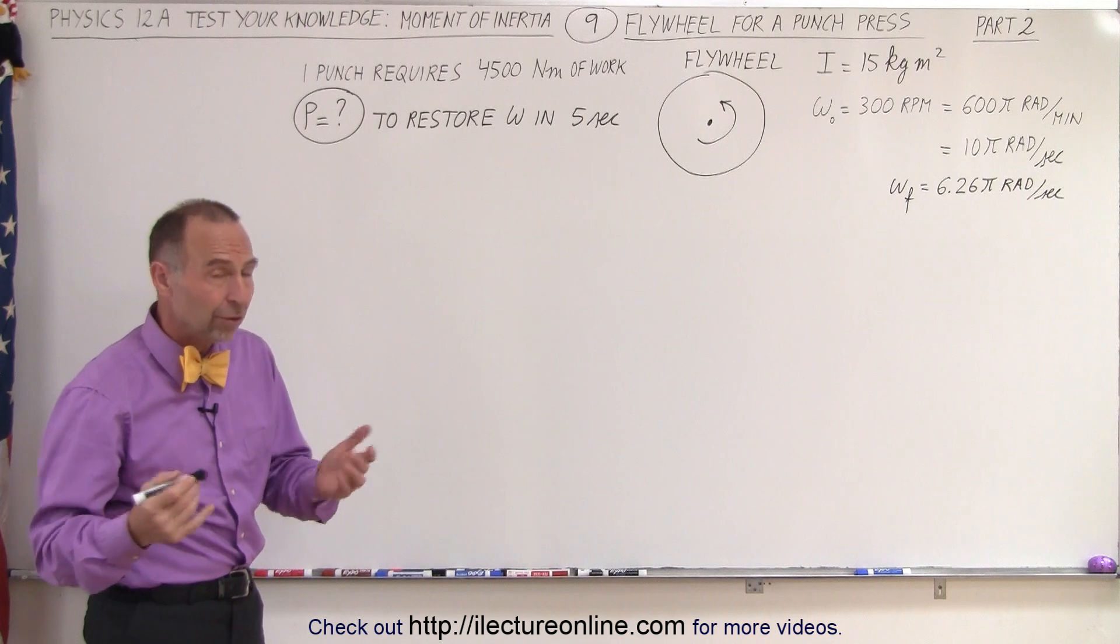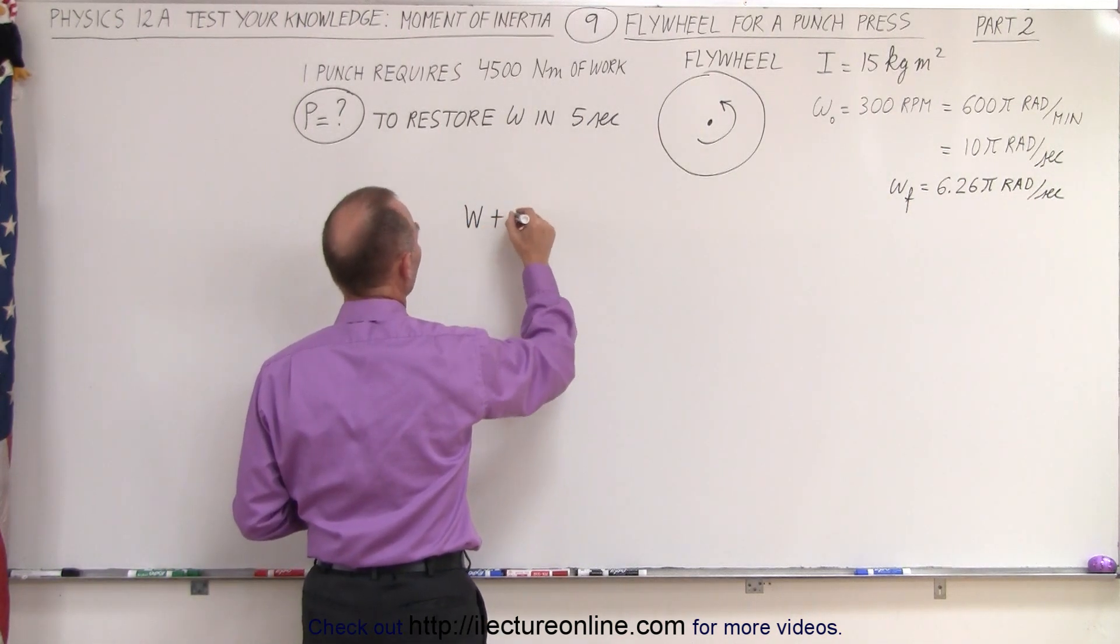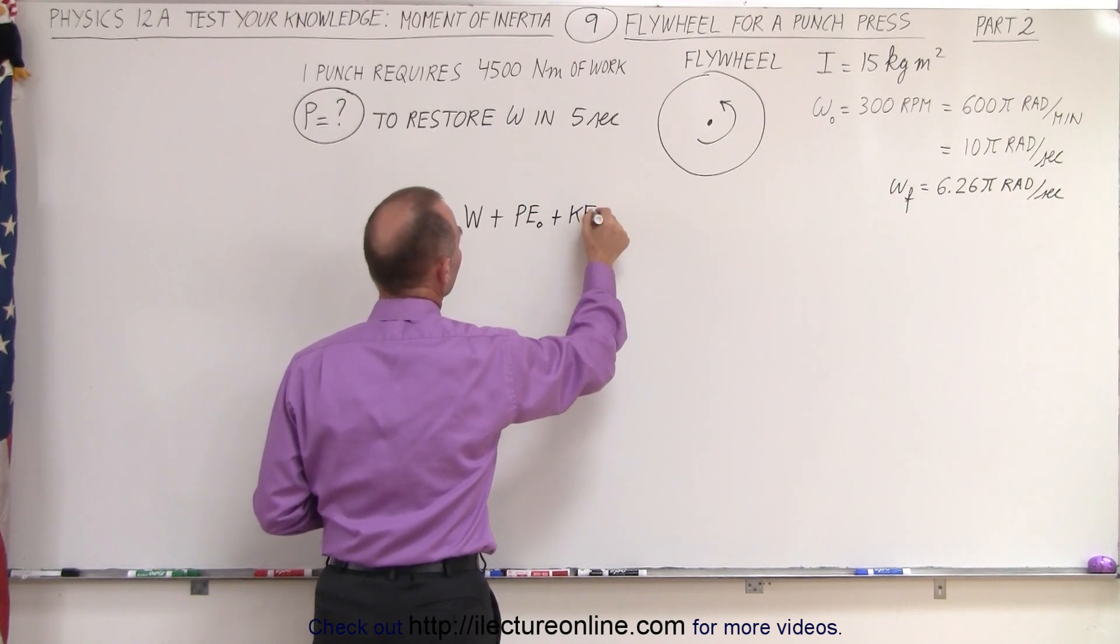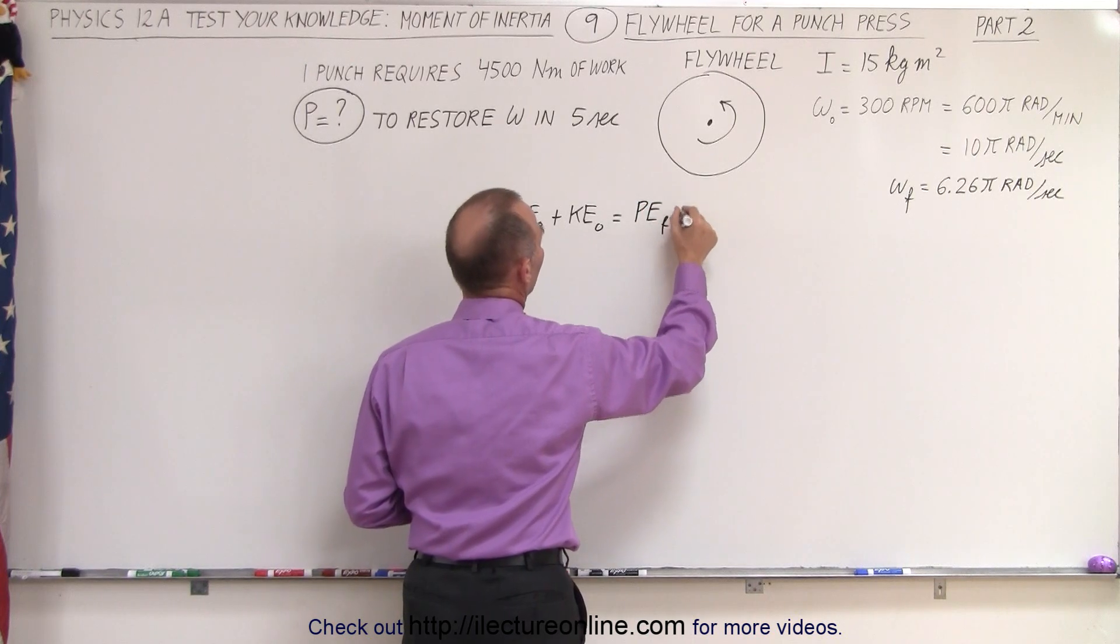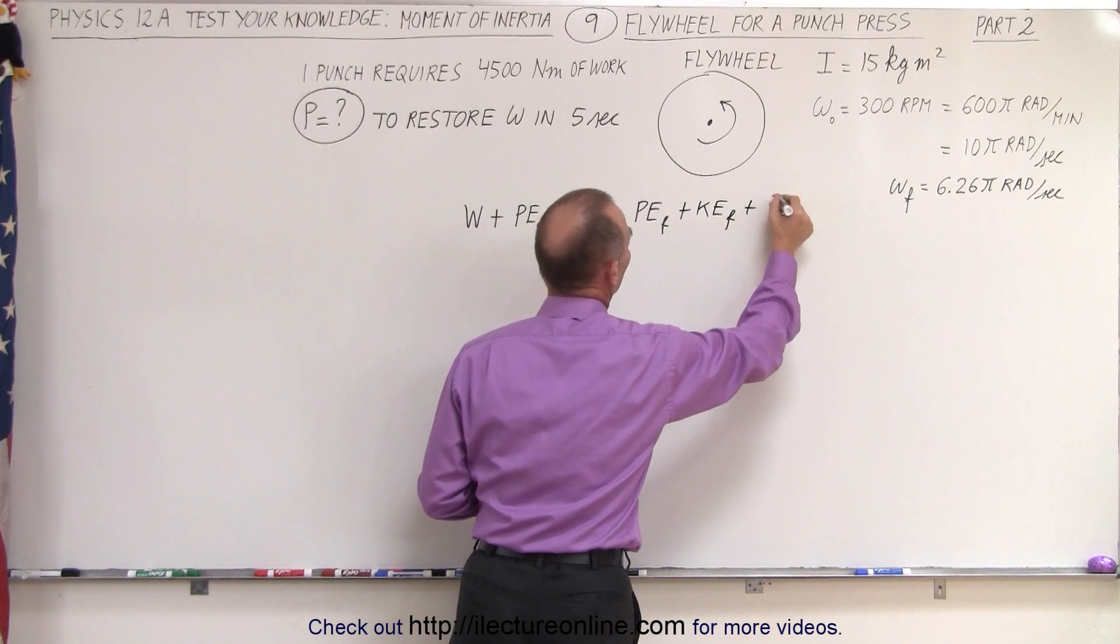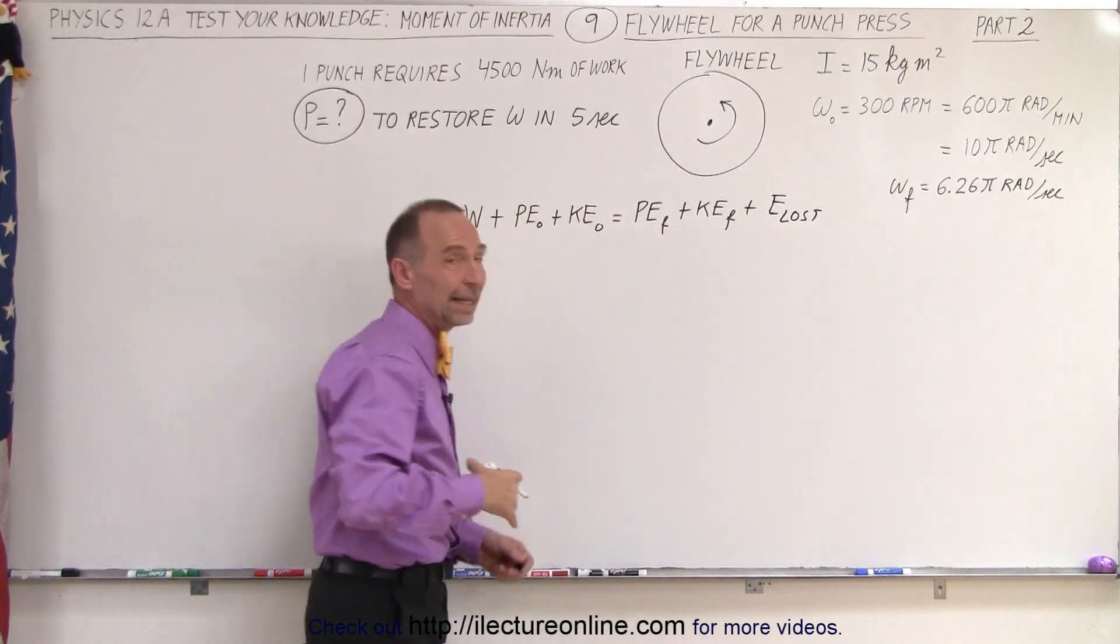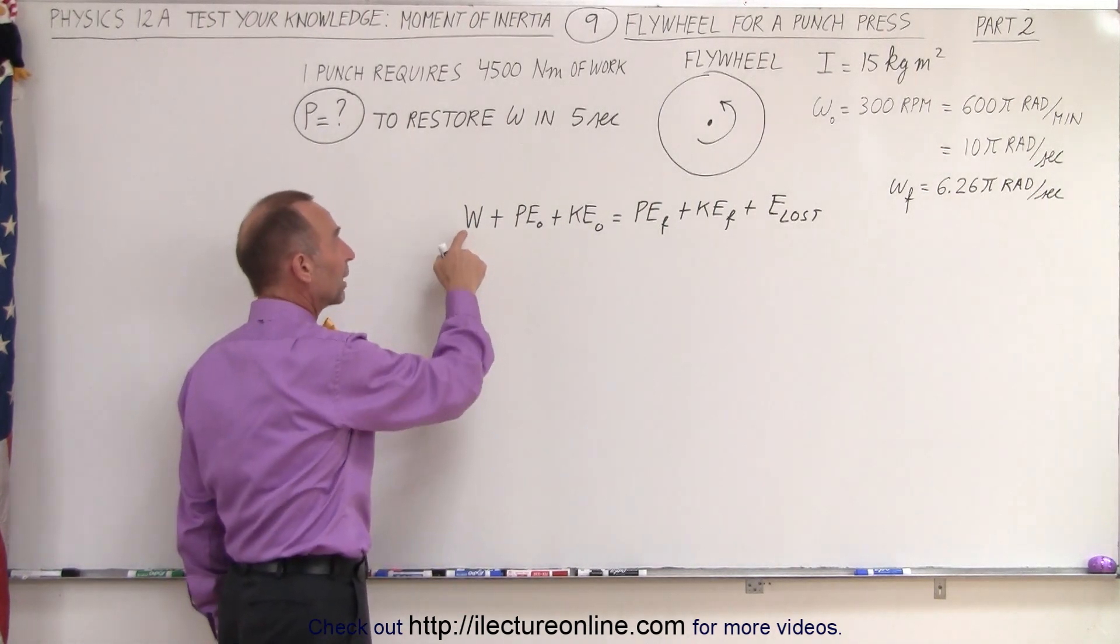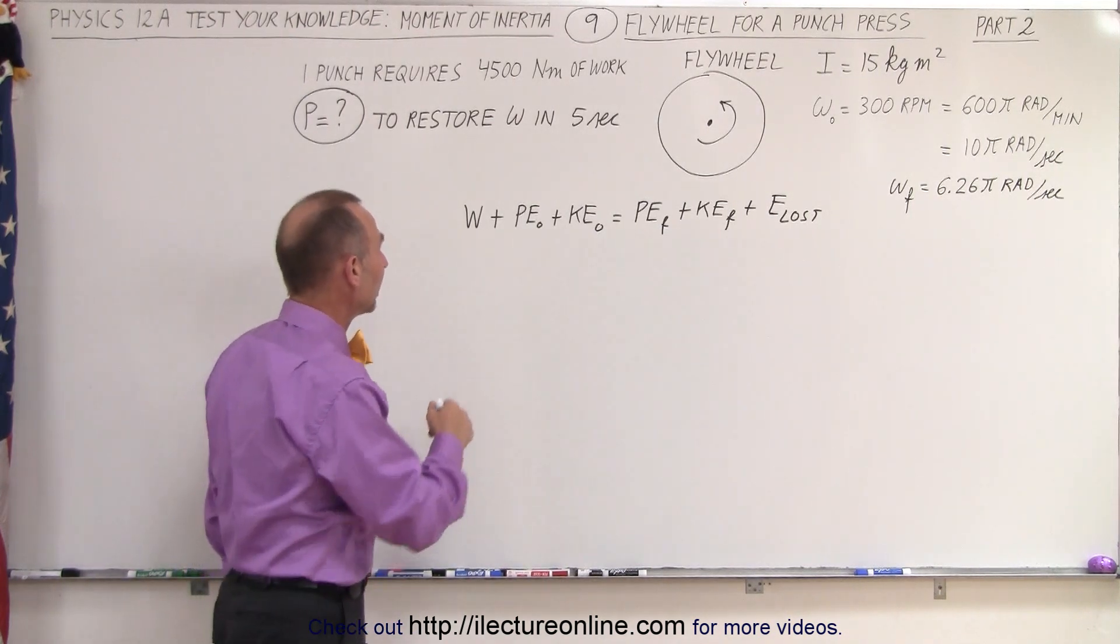The way to do that is to use the same equation: work into the system plus the original potential energy plus the original kinetic energy equals potential energy final plus kinetic energy final plus any energy lost. Here, we're not doing any punching, so we don't have any lost energy, but we do have work input to the system because we're trying to bring it back up to its original omega.